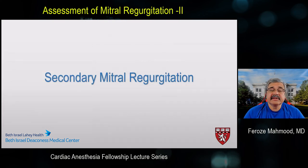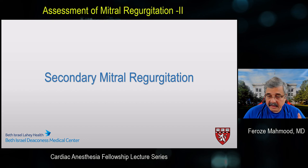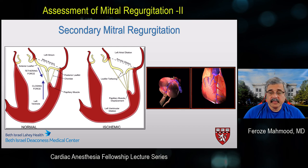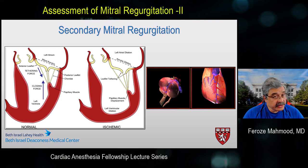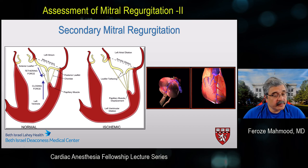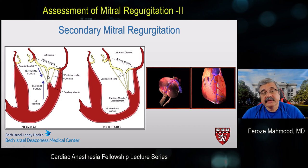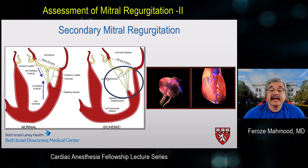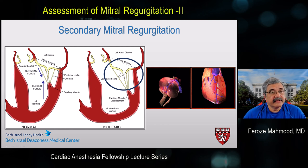Secondary mitral regurgitation occurs when there is no apparent structural abnormality of the valve and the primary reason is ventricular remodeling. It is a mismatch between the closing forces and tethering forces of the mitral valve. As seen in this example, tethering forces pull the mitral leaflets away from the coaptation point, while closing forces bring the valve together. When tethering forces dominate, there is significant apical displacement of the mitral leaflets leading to malcoaptation and significant mitral regurgitation.